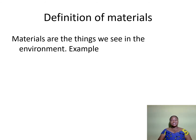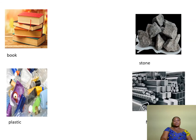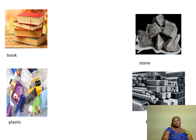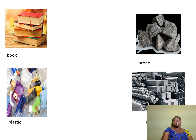So you can mention them, right? Let's go to our next slide to see some examples. So these are examples of materials. We have book, we have stone — you can come out and pick a stone. We have stones in our environment.